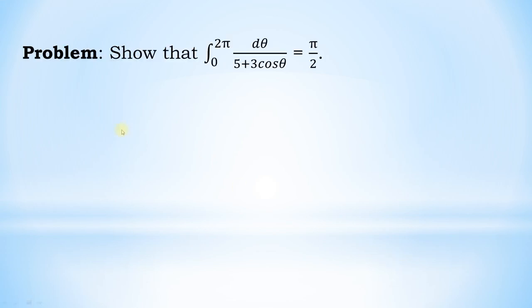The problem is: show that the integral over 0 to 2π of dθ / (5 + 3 cos θ) equals π/2.